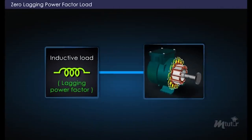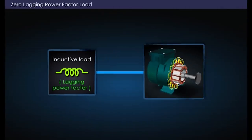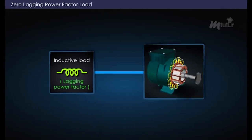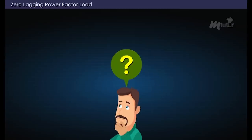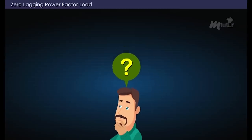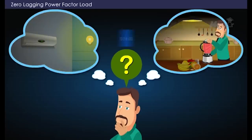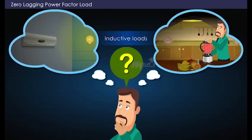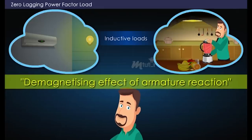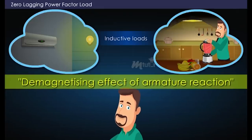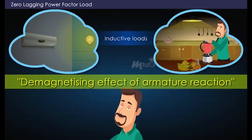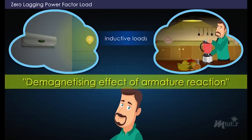For not purely lagging power factor loads, the armature reaction is partly demagnetizing. This allows us to answer Mr. Kamal's question: the loads he turned on were inductive with lagging power factor, which leads to the demagnetizing effect of armature reaction, resulting in a drop of the alternator voltage and causing the lights to dim.